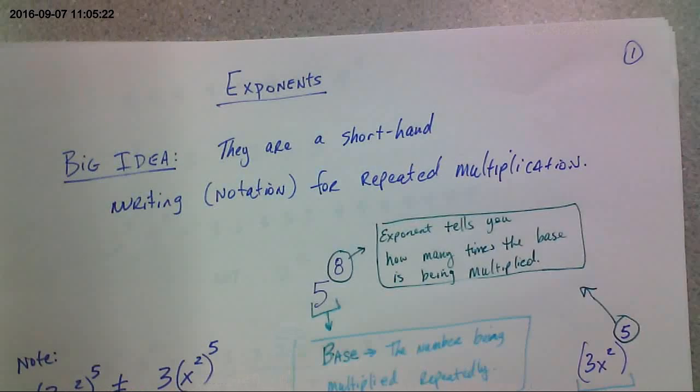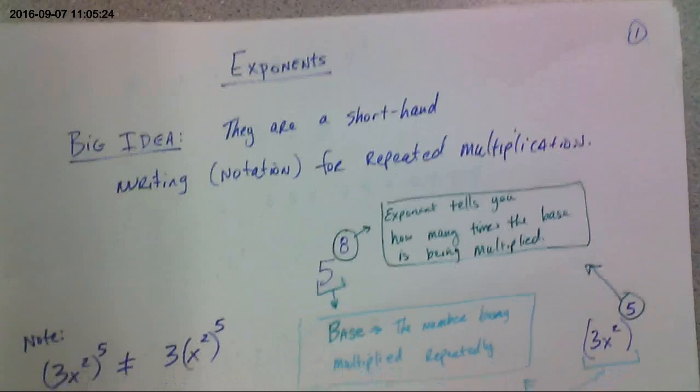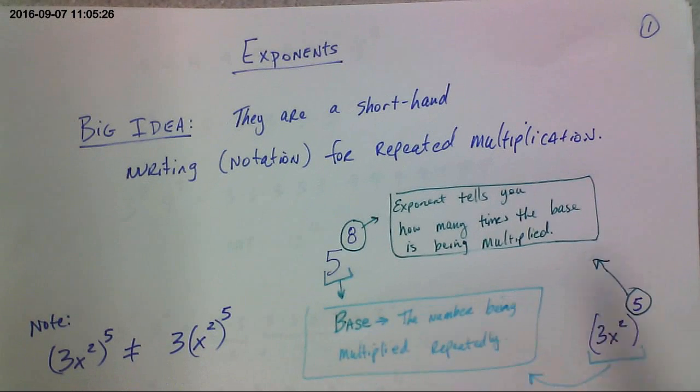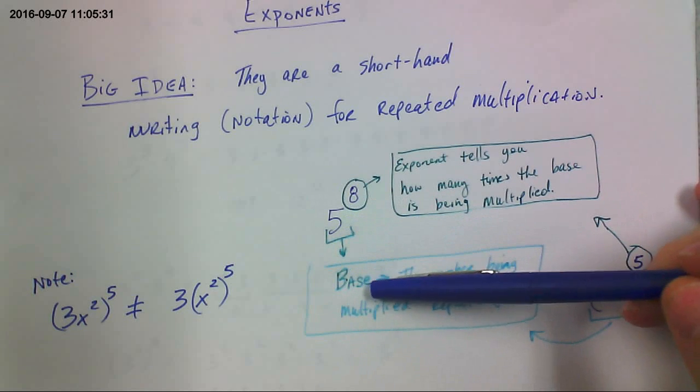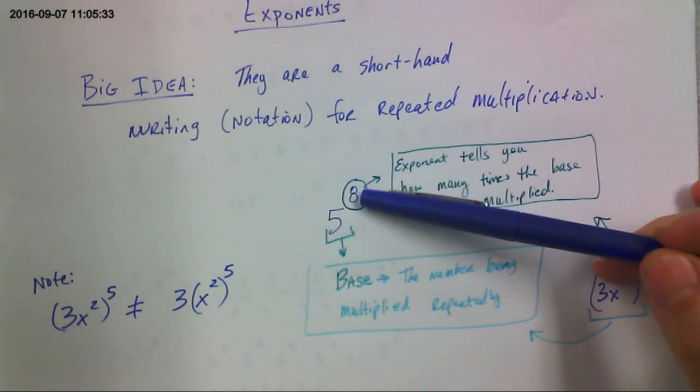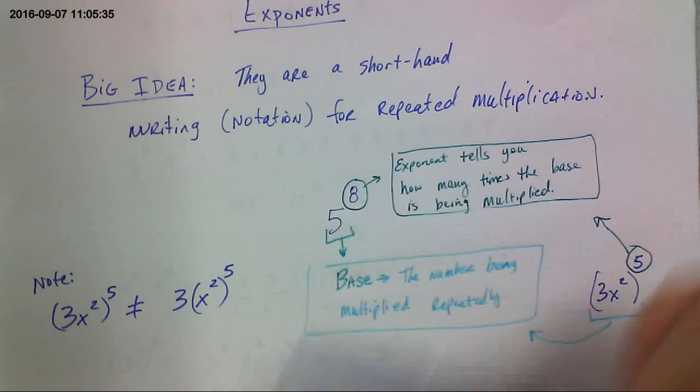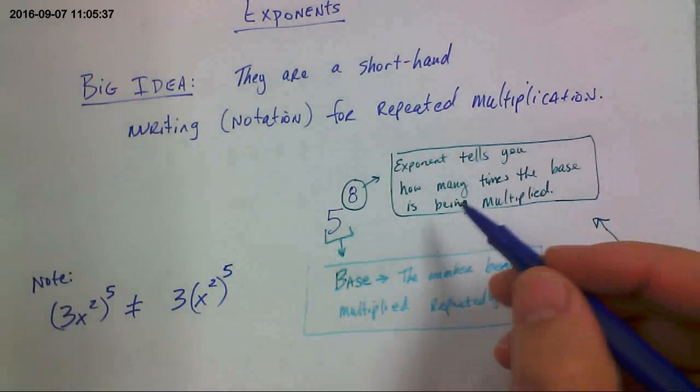Big idea. Exponents is like a shorthand, a shortcut way of writing repeated multiplication. So like in this example right here, 5 is the base. It's the number being multiplied by itself that many times. The exponent tells you how many times it's being multiplied by itself. So if I were to write this out, it would be 1, 2,